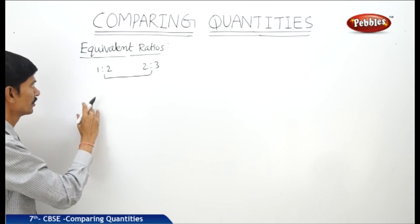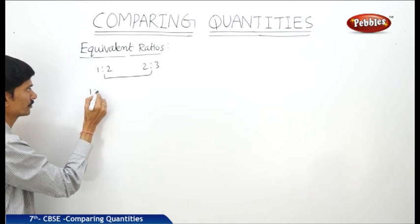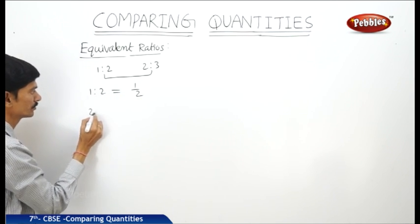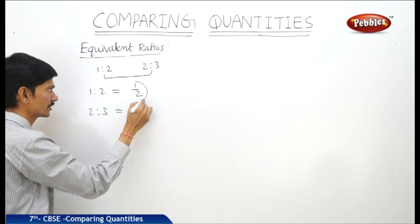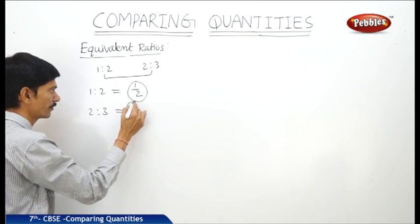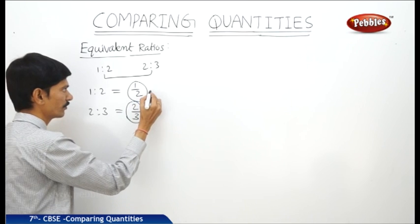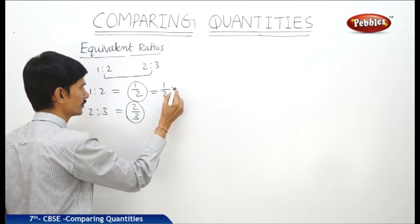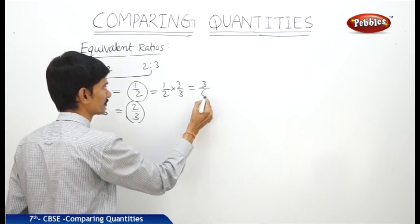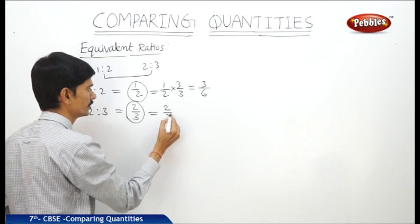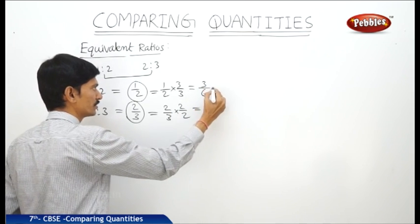How do we compare two ratios? To compare two ratios, first we write them in fraction form. So 1 is to 2 can be written as 1 by 2, and 2 is to 3 can be written as 2 by 3. After writing the ratios in fraction form, we convert these two fractions to like fractions by making the denominators equal. So 1 by 2 becomes 1 by 2 multiplied by 3 by 3, which equals 3 by 6. And 2 by 3 becomes 2 by 3 multiplied by 2 by 2, which equals 4 by 6.